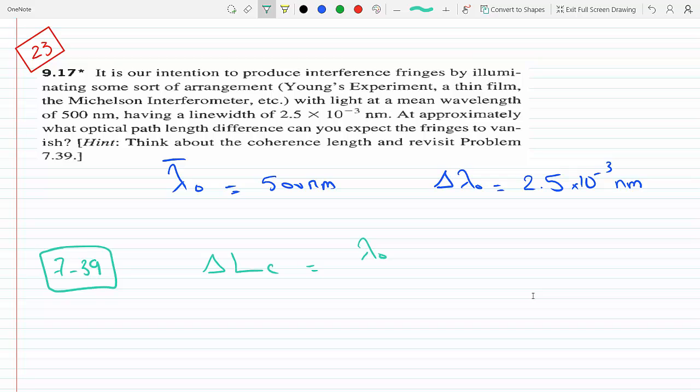...is equal to the mean wavelength squared divided by the line width.